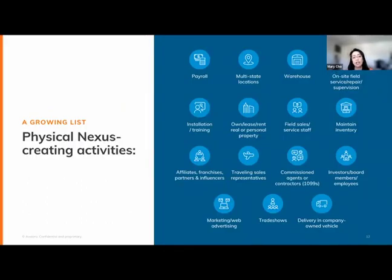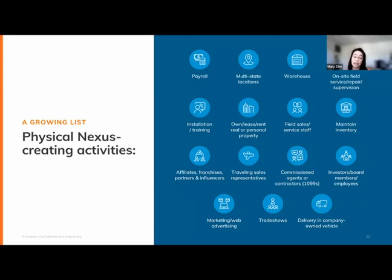Physical nexus has many triggers. Most commonly, having employees in the state — paying payroll taxes is a good indicator. Also, 1099 independent contractors or agents providing services on behalf of the seller create physical nexus. A lot of people don't think it does because they're not employees, but U.S. Supreme Court cases have confirmed that activities like selling, marketing, attending trade shows, doing installations, warranty work, or training on your behalf is no different than having your employees do the same.